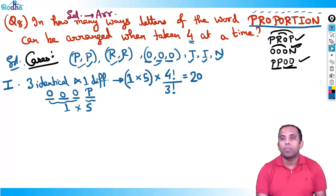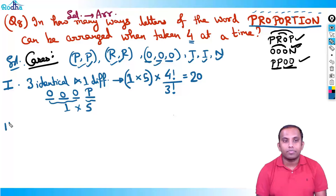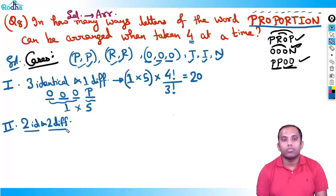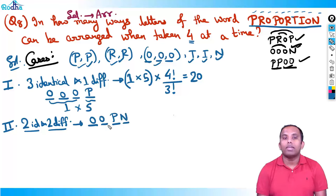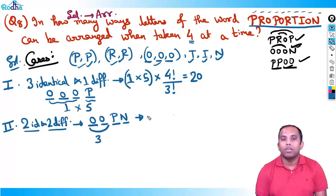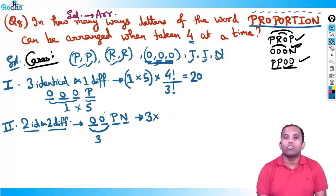Case two: two identical and two different — like O-O-P-N. Two identical can be selected in three ways: double O, double P, or double R. If I select double O, I cannot select O again, so I'm left with P, R, T, I, N — five letters. Out of these five, I select any two different letters in five C two ways. So total groups: three × five C two. Then arrangement: four factorial divided by two factorial — since two letters are identical.